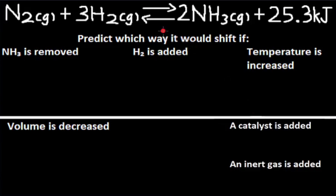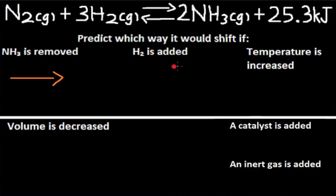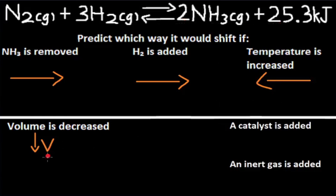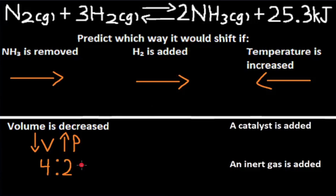Let's look at a practice problem. Using this equilibrium reaction, predict which way it would shift. If NH3 is removed, point at what is being removed — so this is a shift right. If H2 is added, don't point at what is being added — so this is also a shift right. If temperature is increased, don't point at what is being increased — so this is a shift left. If volume is decreased, pressure is increased, so we look at total gas moles: the reactant side has 4 and the product side has 2. When pressure increases, point at the smaller number — so this is a shift right.